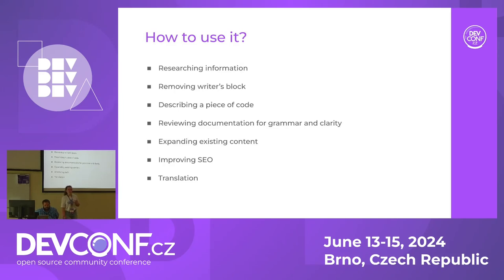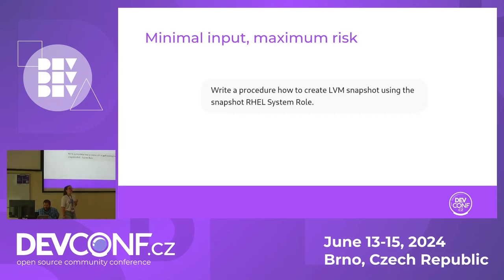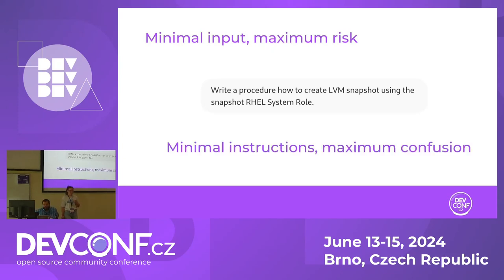You might ask: why don't we use LLMs to create documentation from scratch? Well, let's try it. Here we have a scenario: we asked GPT to write a procedure for how to create an LVM snapshot using the snapshot RHEL system role — that's a collection of Ansible modules and roles. If you've ever tried asking an LLM to generate information about a new or niche technology, this is going to be a failure.